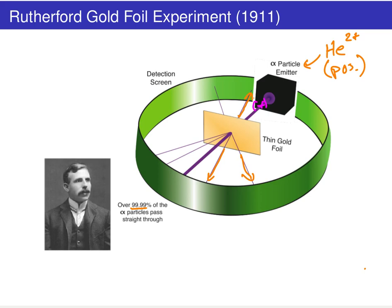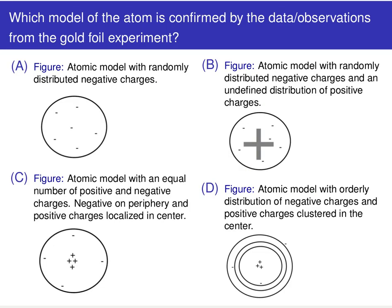Others will practically bounce straight back and hit almost right next to the alpha particle emitter. This was pretty surprising results that allowed us to draw a number of conclusions about atomic structure.